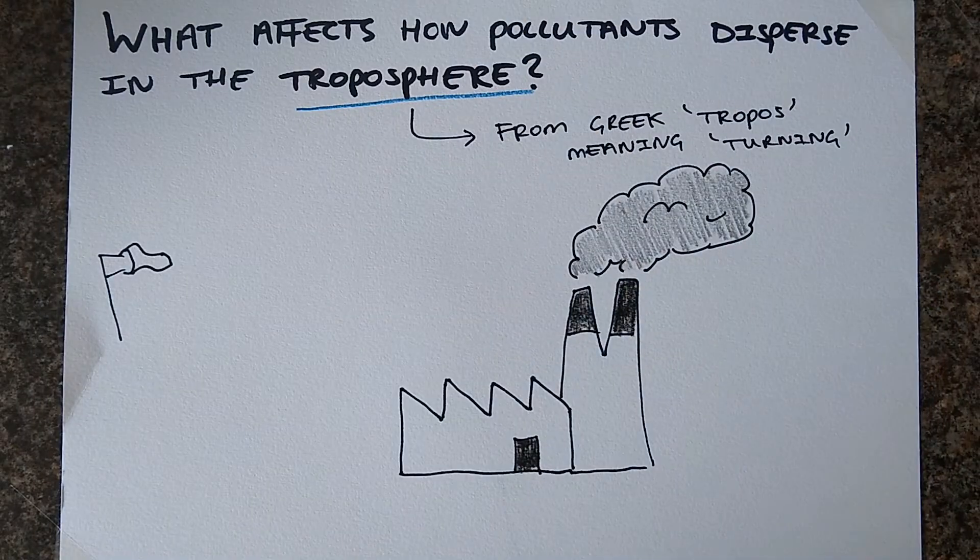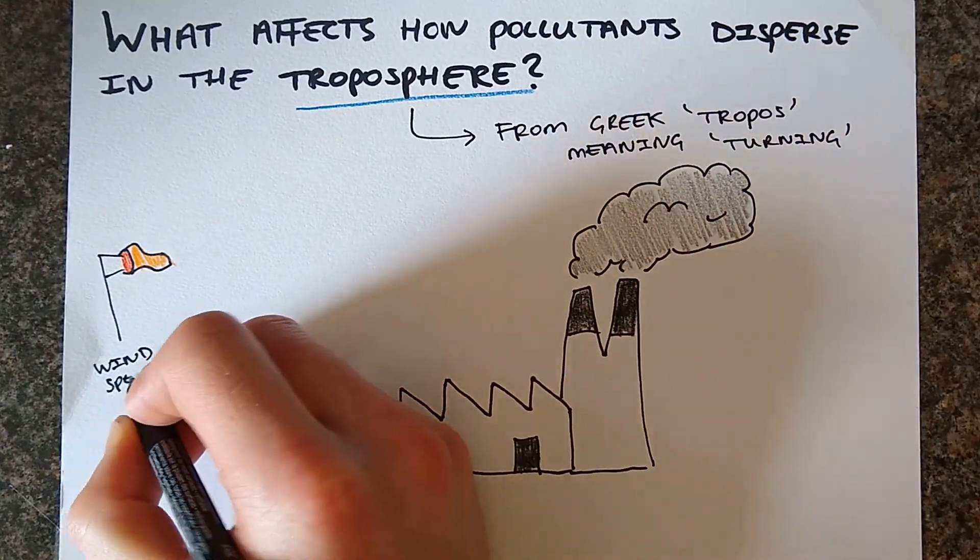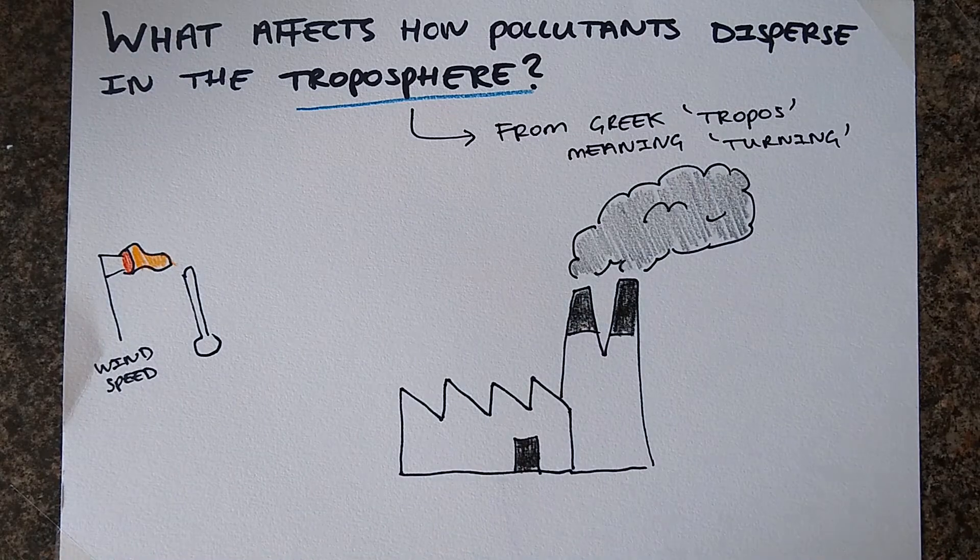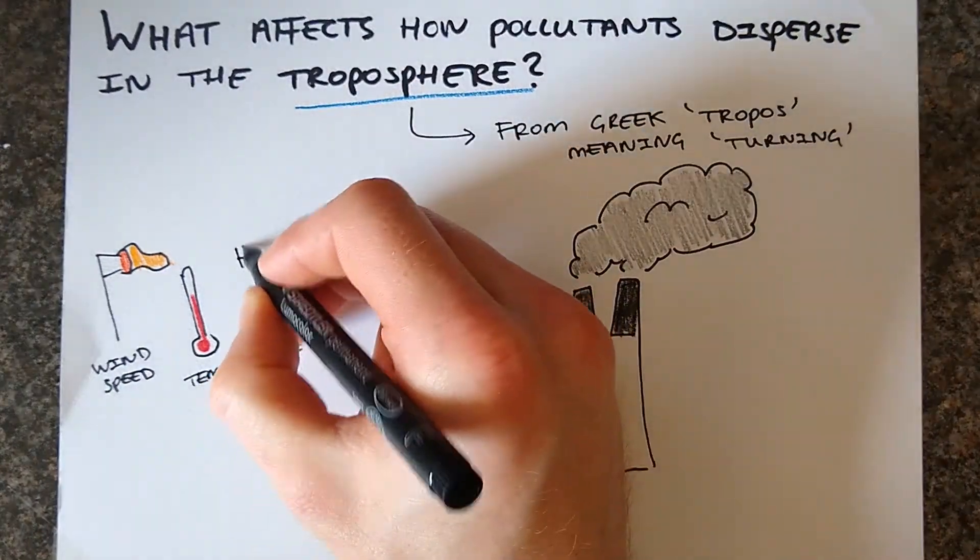Similarly to how the agitation of the glass or the hot and cold water affected the ink in the previous demonstrations, wind speed and ambient temperature, considered together along with other factors as meteorological conditions, have a huge effect on how pollutants disperse.